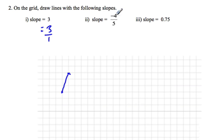And if we're going to draw a line with slope negative 4 over 5, well, we go from this point down 4 and over 5, and put a point in and draw a line connecting the points.